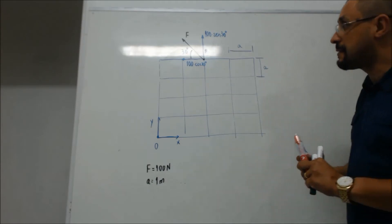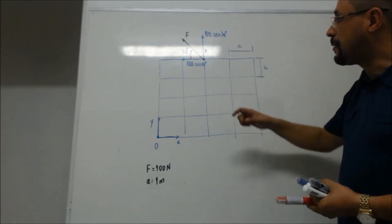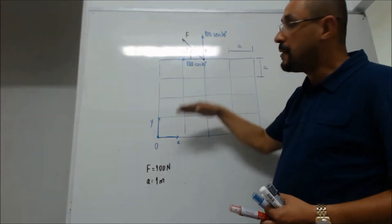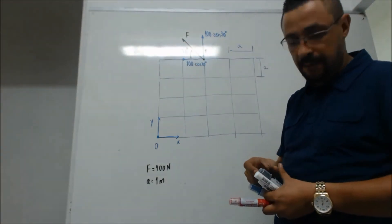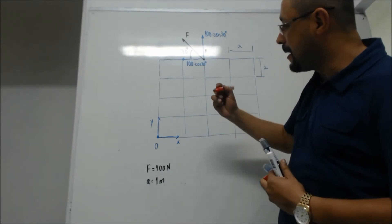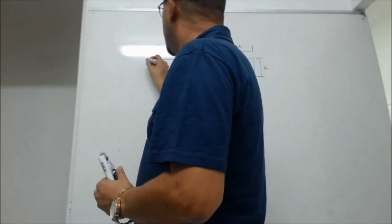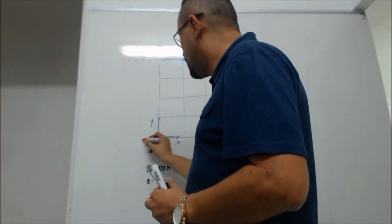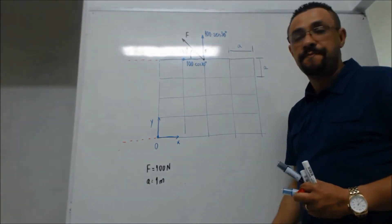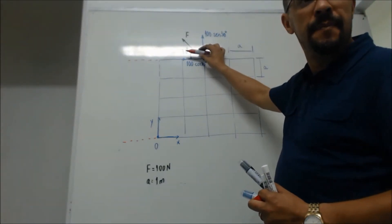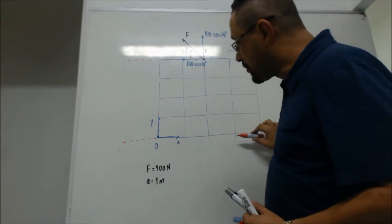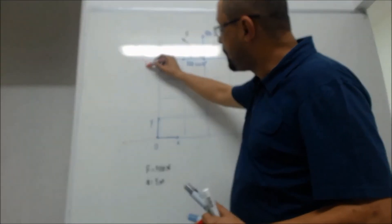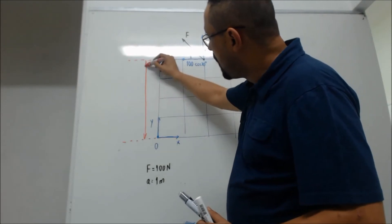Agora você vai fazer assim: encontrar a distância dessa força em relação a esse ponto. Essa força é horizontal, certo? Então, vou prolongar aqui e vou traçar uma paralela passando pelo ponto. Esse é o segredo. Onde está a força e o ponto — no ponto, eu traço uma paralela. A distância de onde está a força até a paralela é o braço.